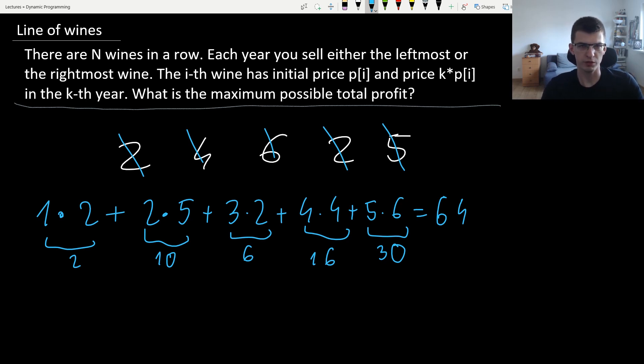You can also think about the greedy approach, taking each time the more expensive or less expensive from leftmost and rightmost wine, but it wouldn't lead to an optimal solution and this example shows it. You would get the total result of 63, which is not optimal.